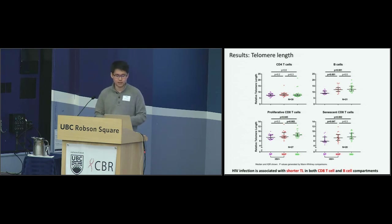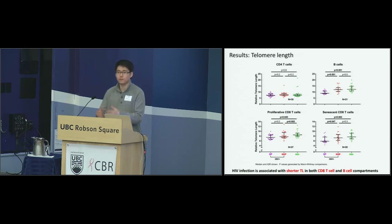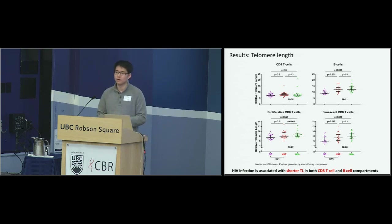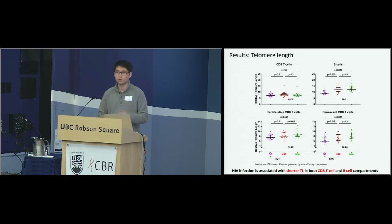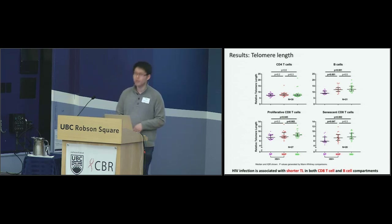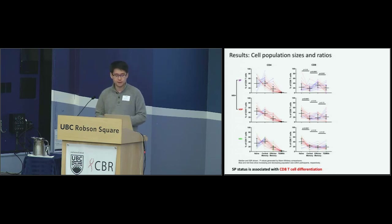Looking at proliferative CD8 T cells, the difference is between uninfected people and infected people — no difference between slow progressors and non-slow progressors. But the opposite is true for the B cell and senescent CD8 T cell compartments, where there's not really a difference between HIV-negative and people successfully controlled by drugs. The difference is between slow progressors — not on drugs, apparently controlling HIV — who show lower telomere length in these two cell compartments.